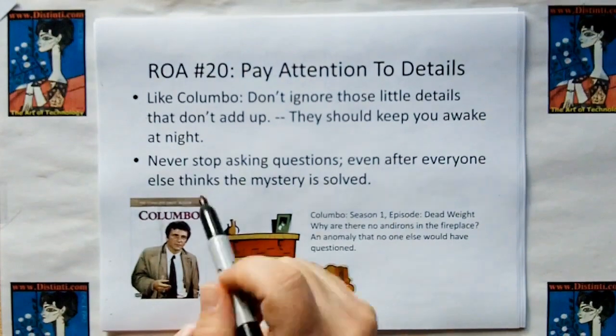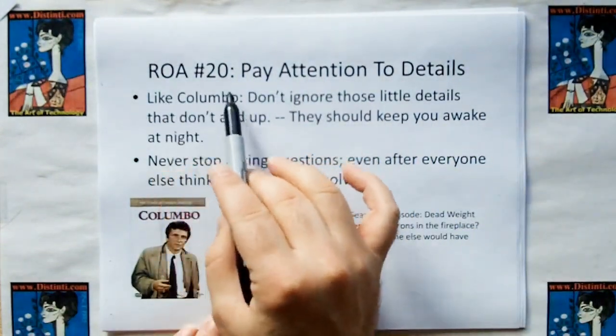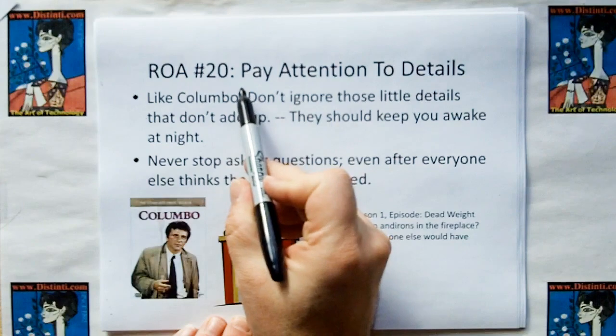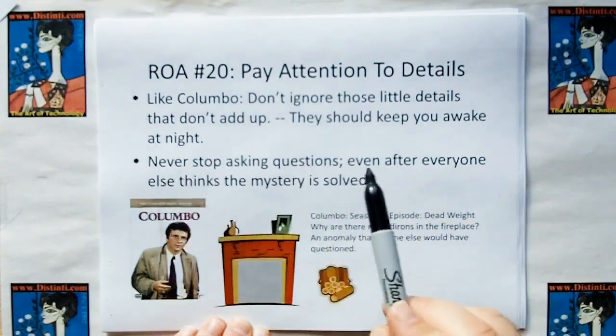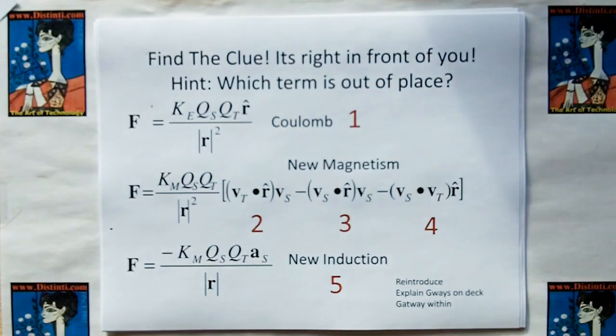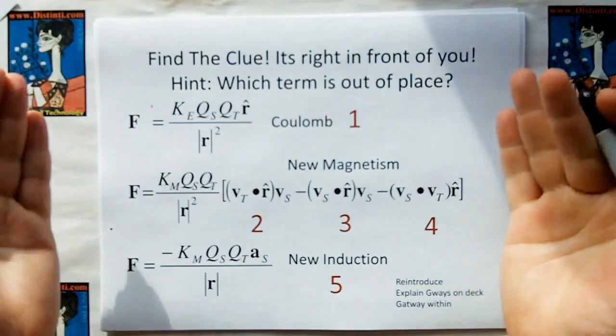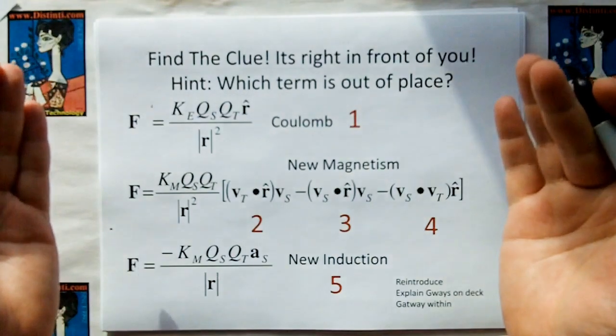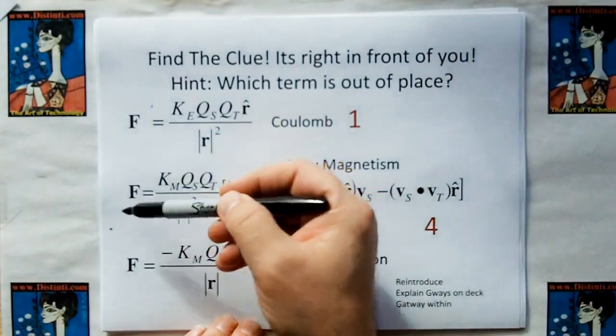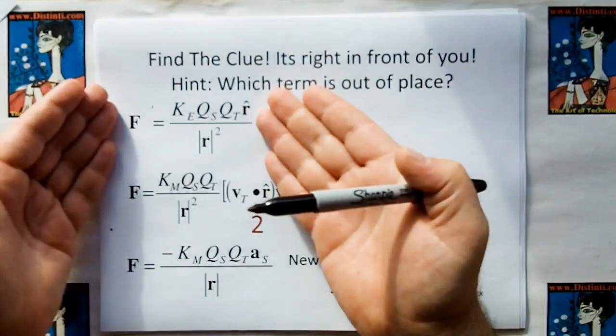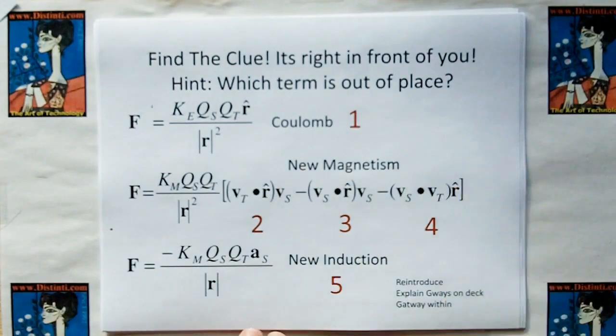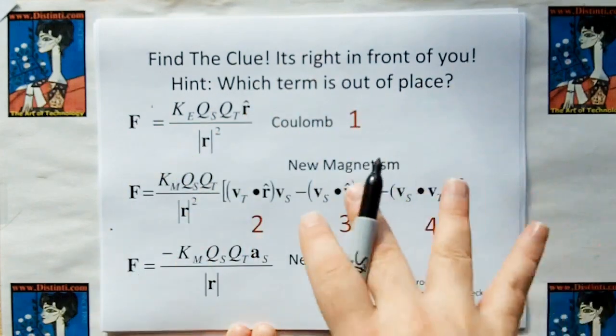So shall we begin? Again, don't assume that these are correct or complete. And some of these may actually be pretonic models. We don't know yet. And again, these models may look nothing like the pretonic models. So how do we proceed? Well, we've got to use rule of acquisition number 20, which I used to call Columbo's method. But again, I'm trying to rework them into titles that explain what's inside so they're more compact. And this got changed in name to pay attention to details. Don't ignore those little details that don't add up. They should keep you awake at night. So the clue is right in front of you. Okay? This is new electromagnetics. And again, these are just observations of experimental data.